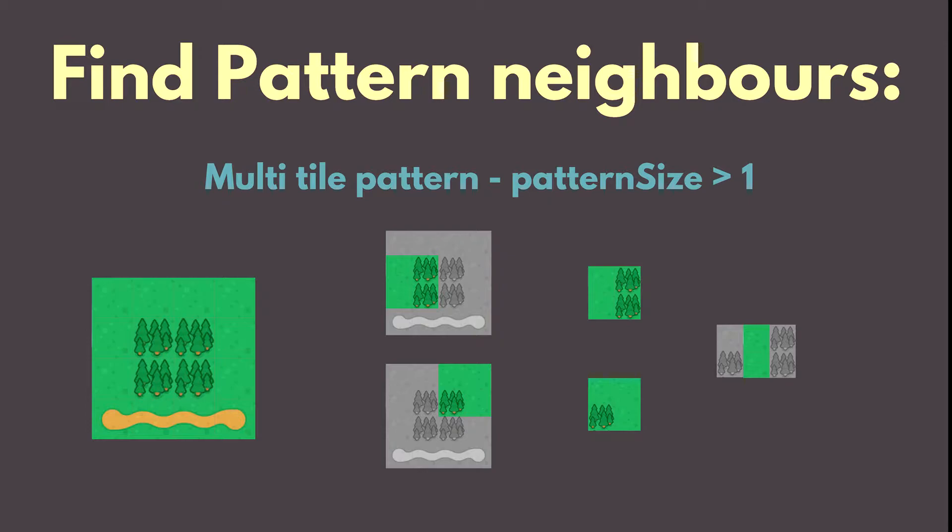You can see it in the image to the far right on the slide. You can see that we are comparing if the images can overlap. So, the grass tiles allow those two patterns to overlap, so we can say that those two patterns are neighbors.